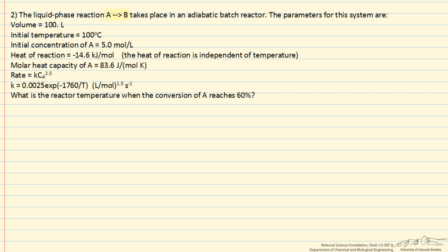In this example we have a liquid phase reaction A goes to B in an adiabatic batch reactor, and we're given various parameters for the system. The question is, what's the reactor temperature when the conversion of A reaches 60%?